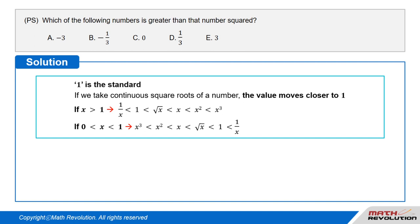If x is greater than 1, then 1 over x is smaller than 1, which is smaller than square root of x, which is smaller than x, which is smaller than x squared, which is smaller than x cubed.